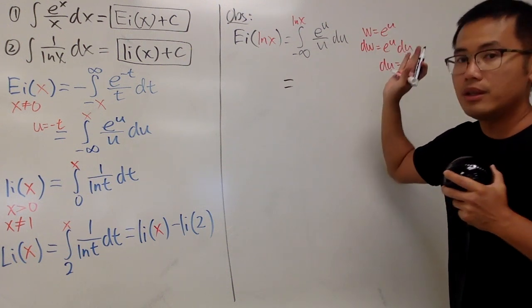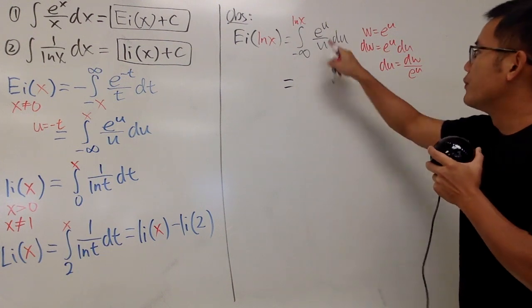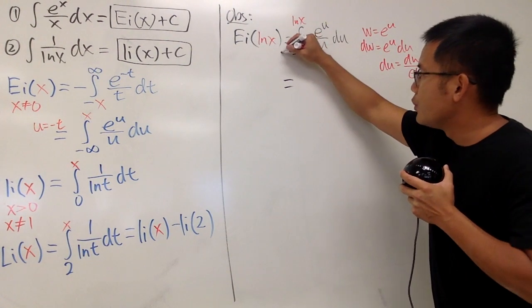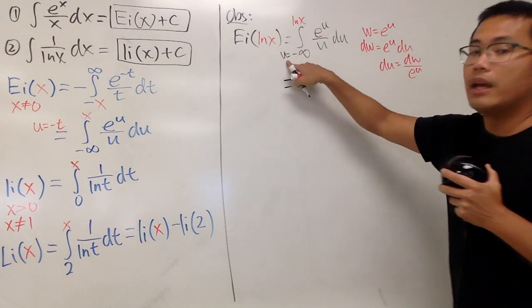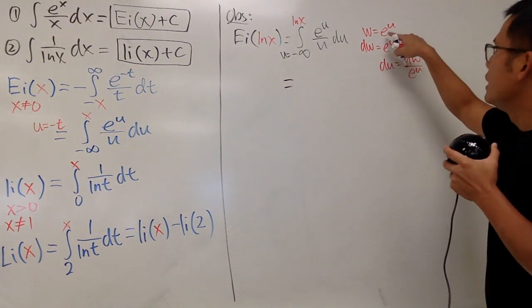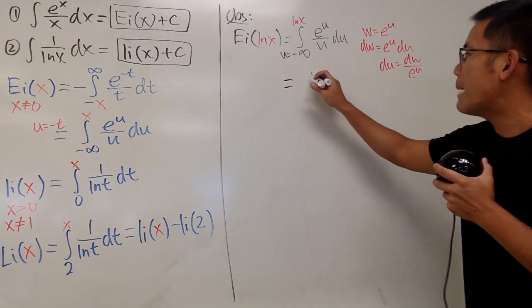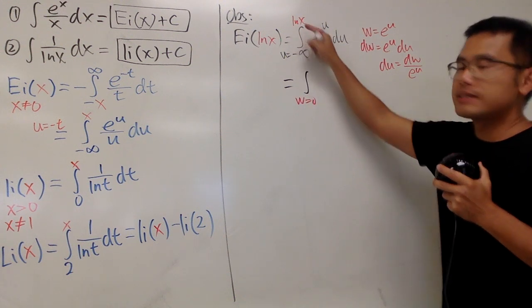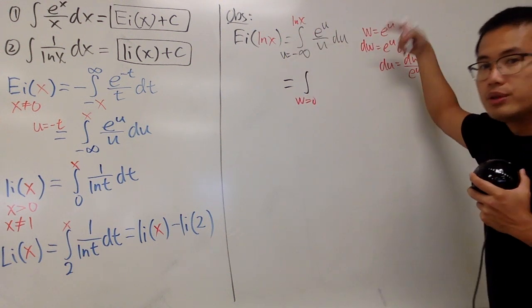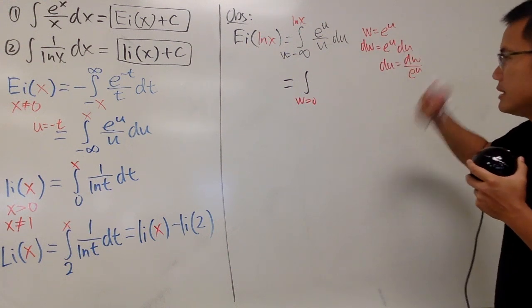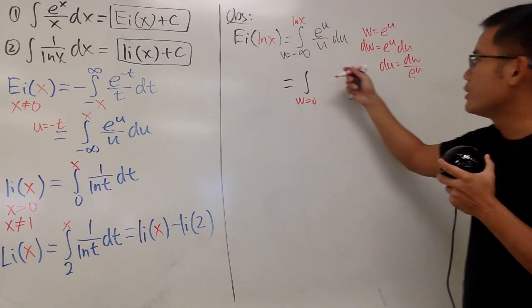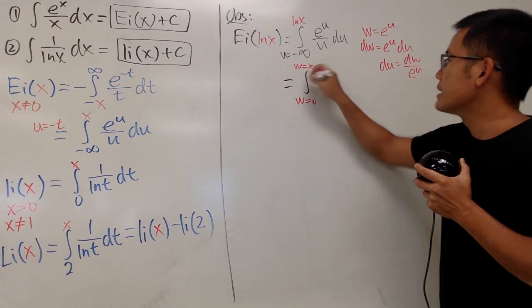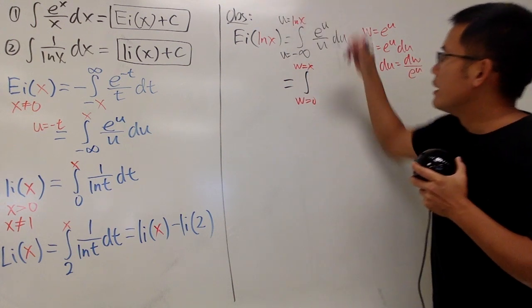And let's see. Let's take this into the w world. For this integral, here we have u goes from negative infinity, and you put negative infinity here, e^(-infinity) is 0, so that means w will start with 0, and then we put ln(x). Right here, e^(ln(x)) is just x, because e and ln cancel, so w will be going to x, like this.